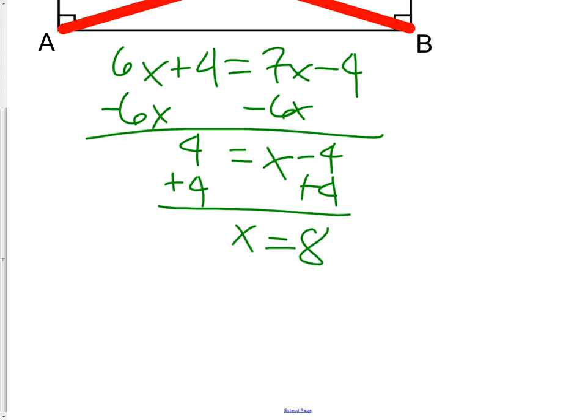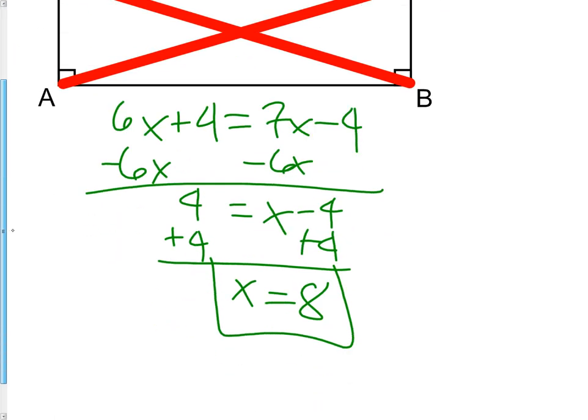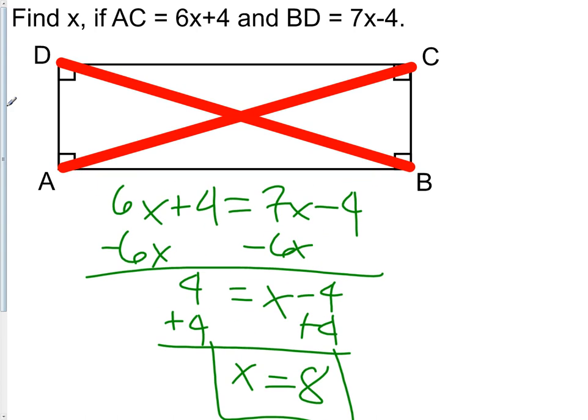Now, the most important thing always in these types of problems is to go back and make sure you answer the question that they asked. This question says, find X. So we're done. X is 8. But sometimes they might say, how long is AC? So in that case, we would need to put 8 back into the original equation in order to get our final answer of 52. 6 times 8 is 48, plus 4 makes 52. So it all depends on which question they're actually asking you.